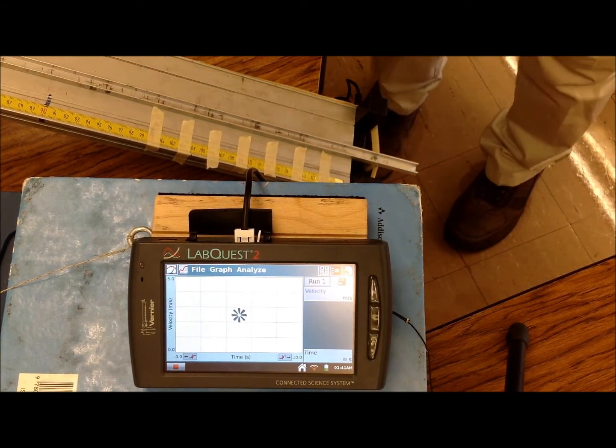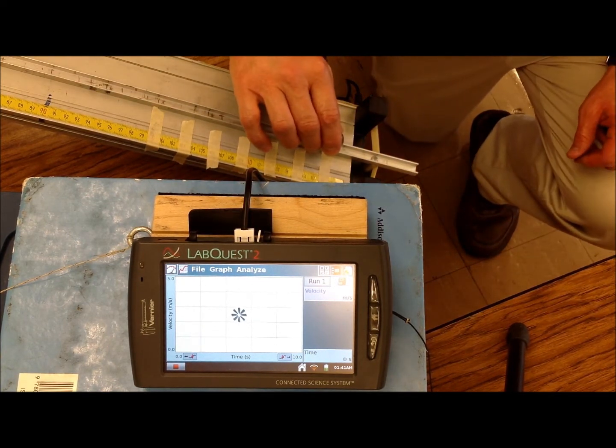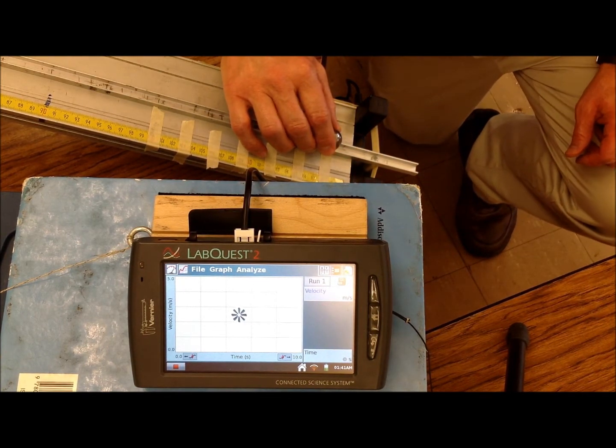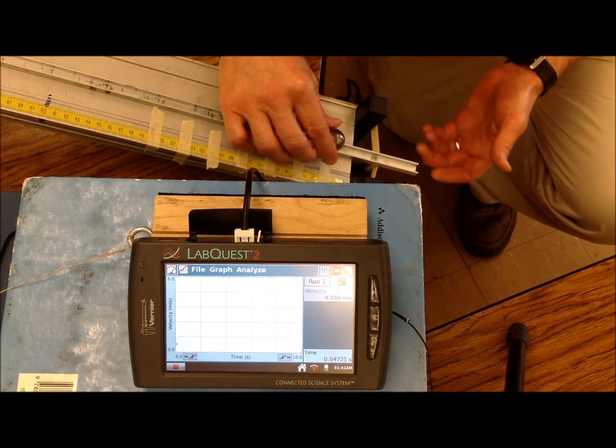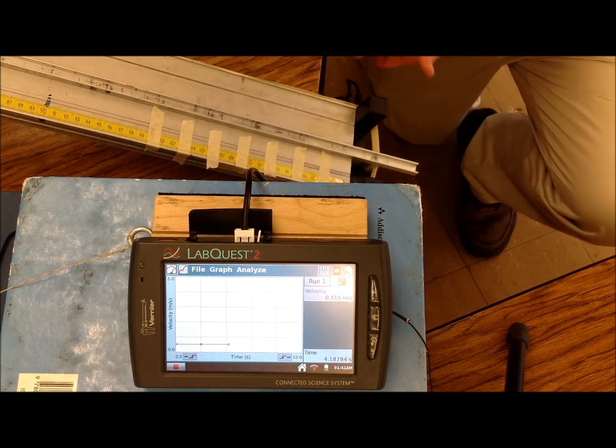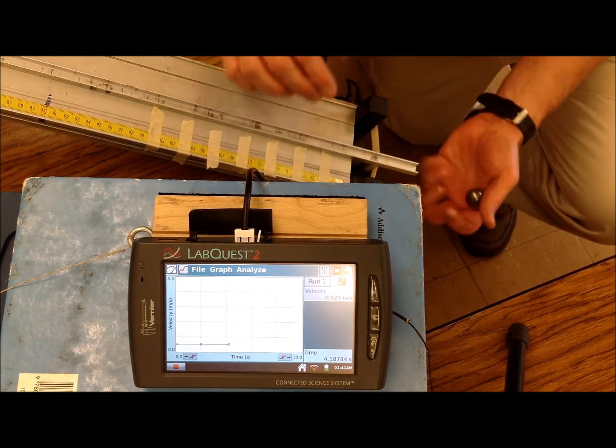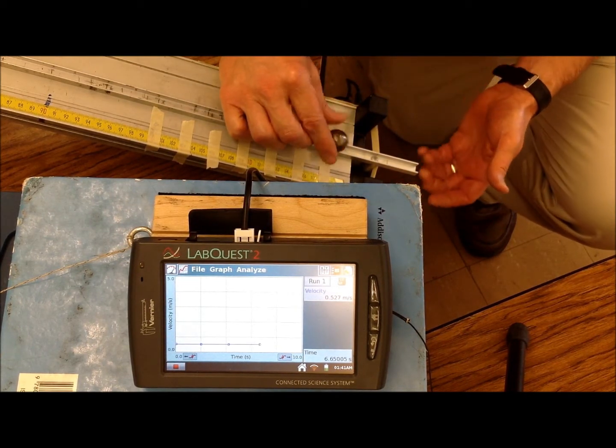So I take the ball, I put it right at the forward edge of the ball, at the forward edge of the 3-centimeter tape, and I let it go. 1, 2, 3, 4, 5.